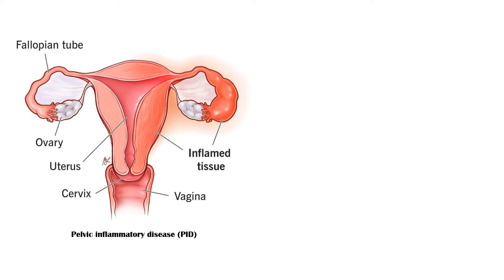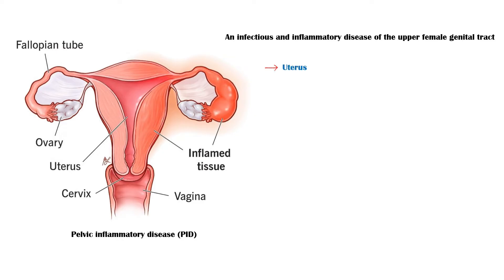Pelvic inflammatory disease is an infectious and inflammatory disease of the upper female genital tract, including the uterus, fallopian tubes, and adjacent pelvic structures.